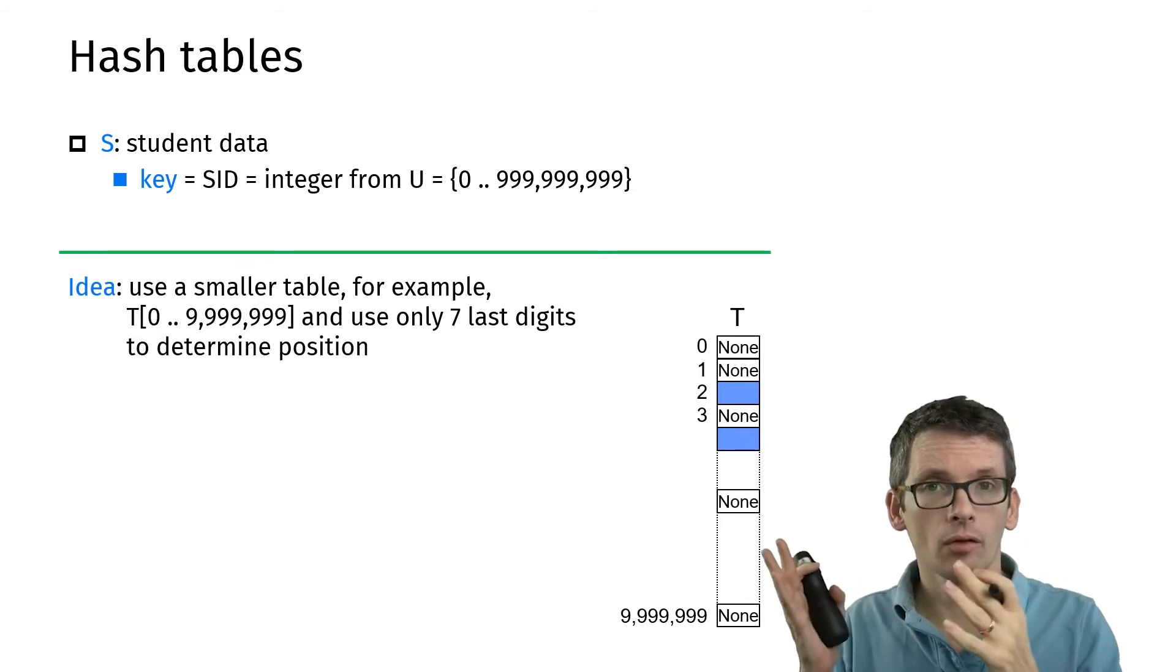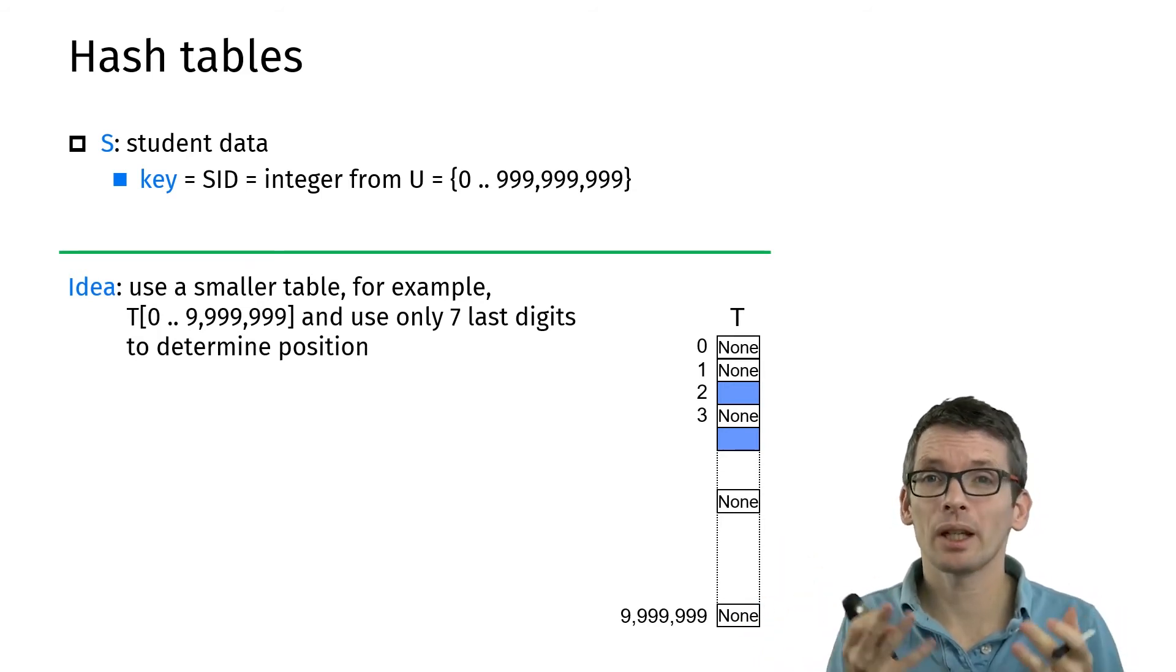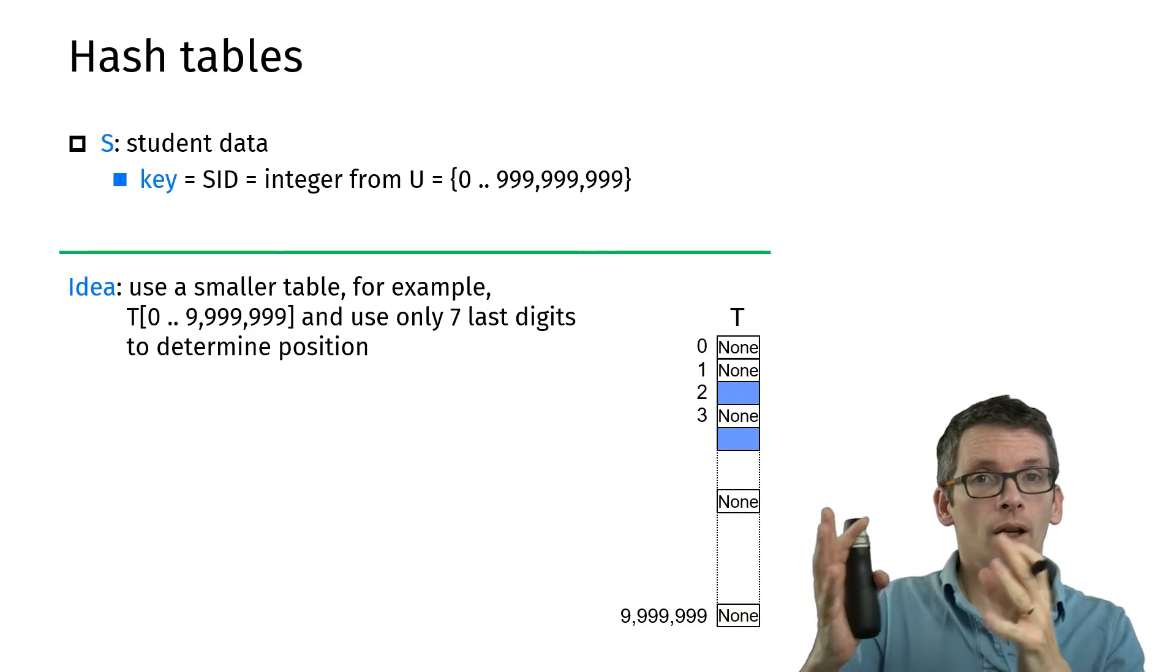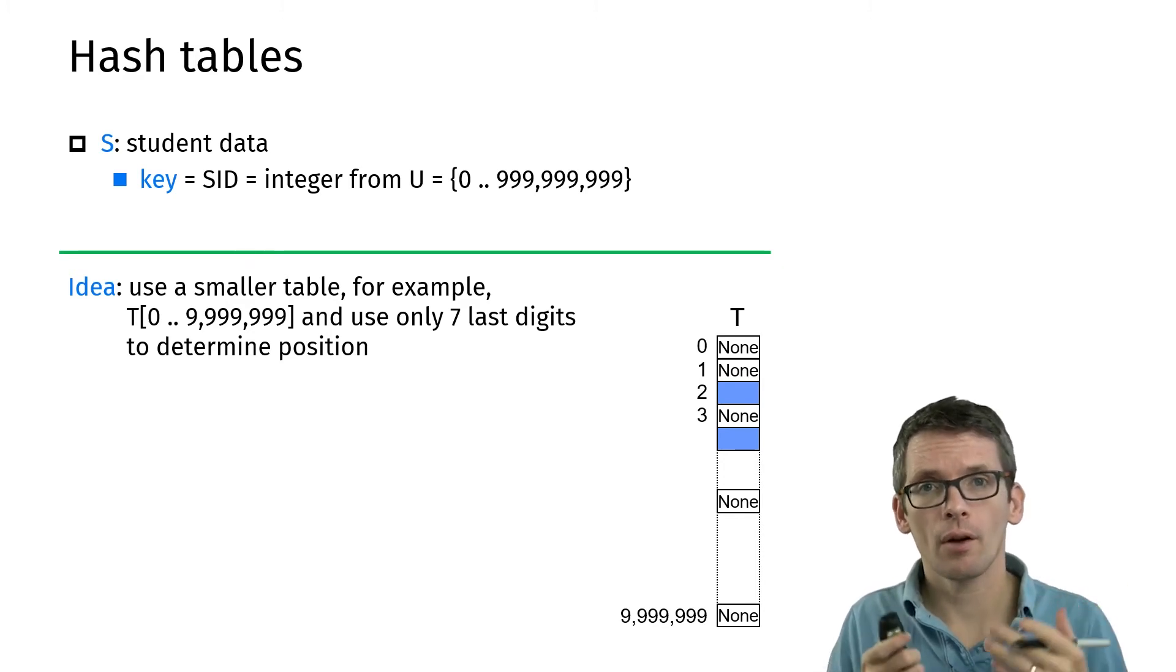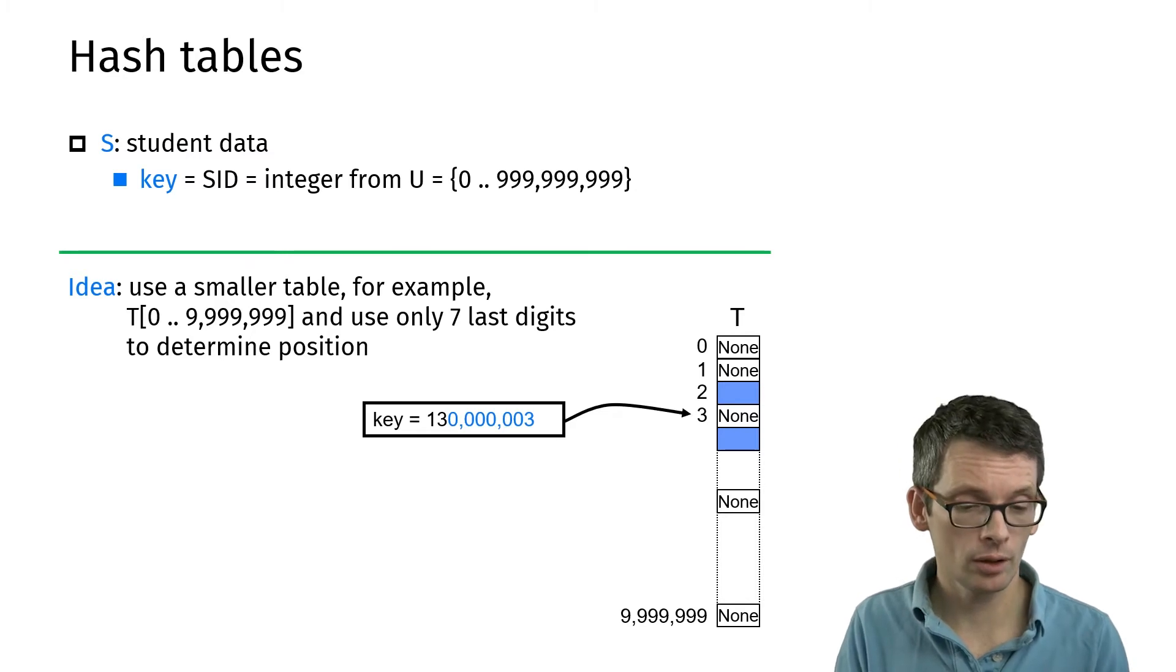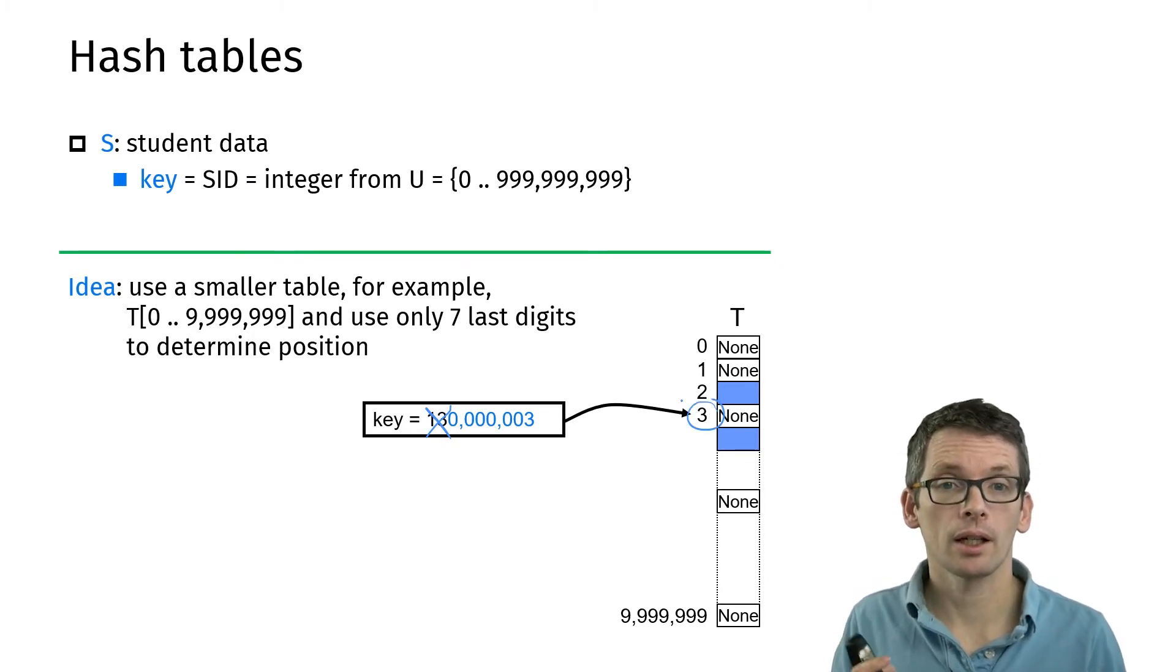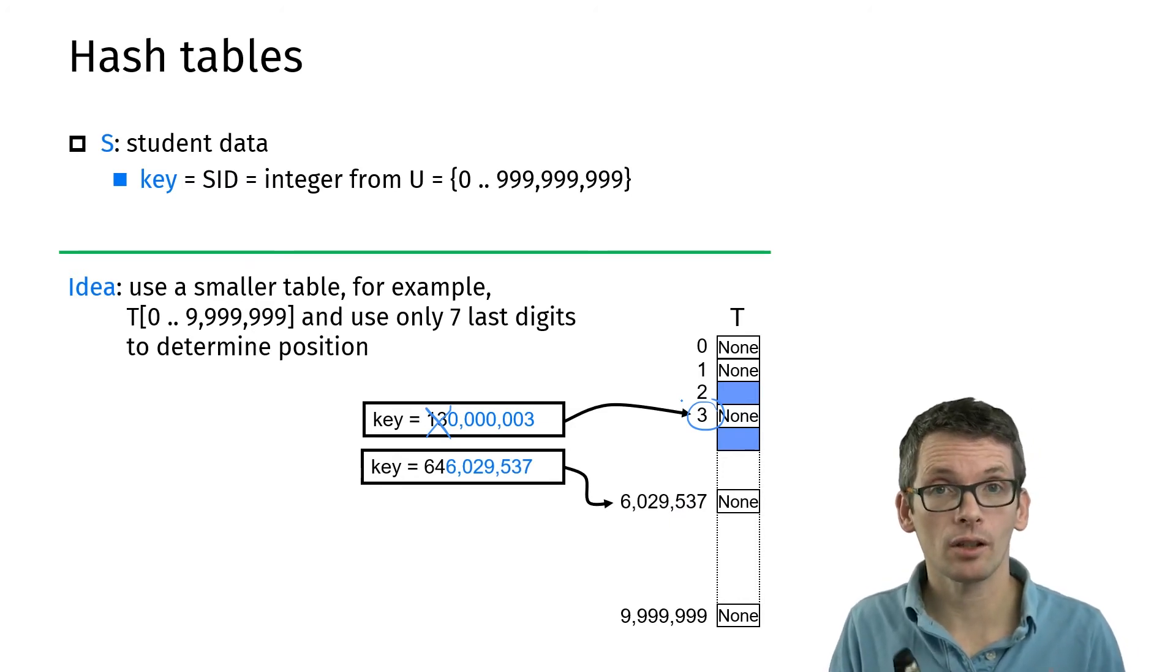Now the problem is we can no longer use the ID numbers to access a table. We have to derive a number from those nine-digit numbers that gives us the index of an entry in this table. For instance, a very simple way of doing this would be to take the last seven digits. In this example, if I forget the first two digits, the remaining digits simply tell me I'm here in entry 3, or in this example, I take whatever number the last seven digits are.